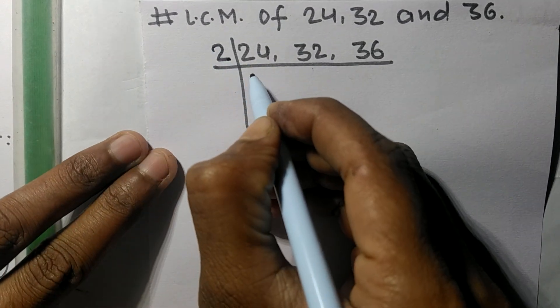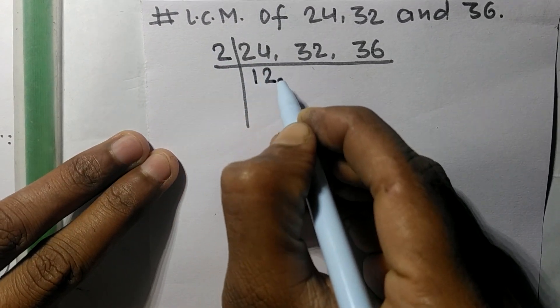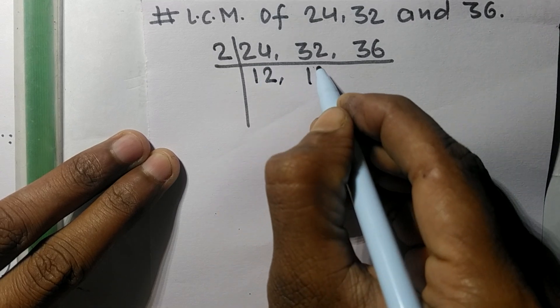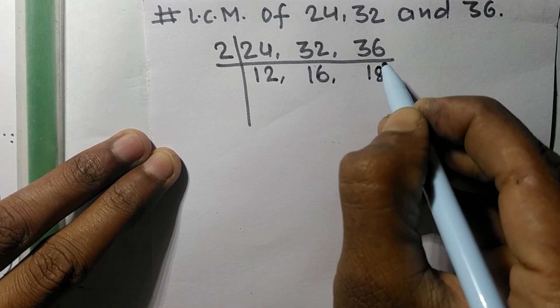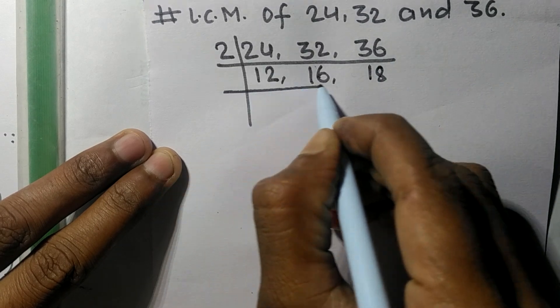So 2 times 12 means 24, 2 times 16 means 32, 2 times 18 means 36. So again, these all numbers are divisible by 2.